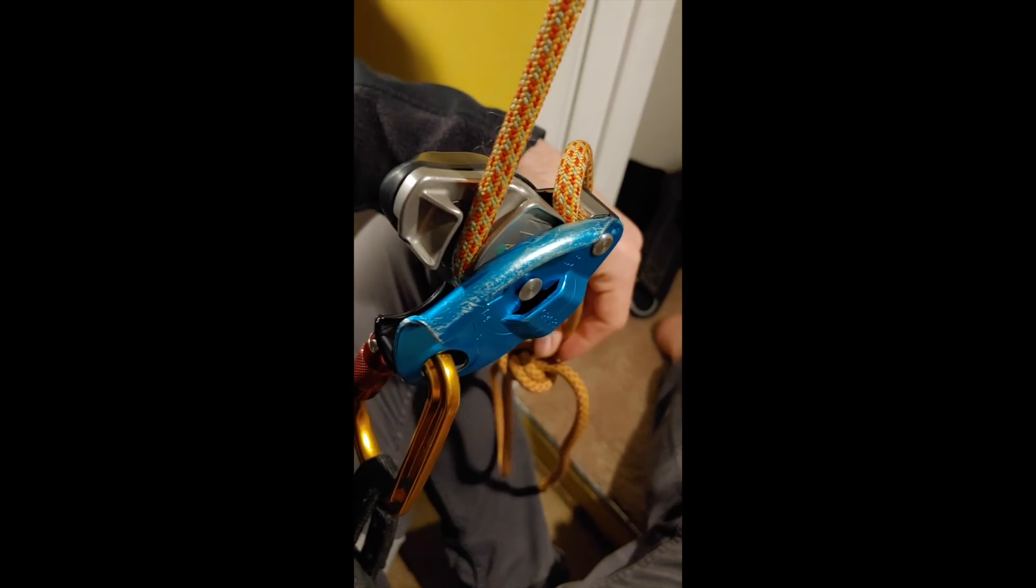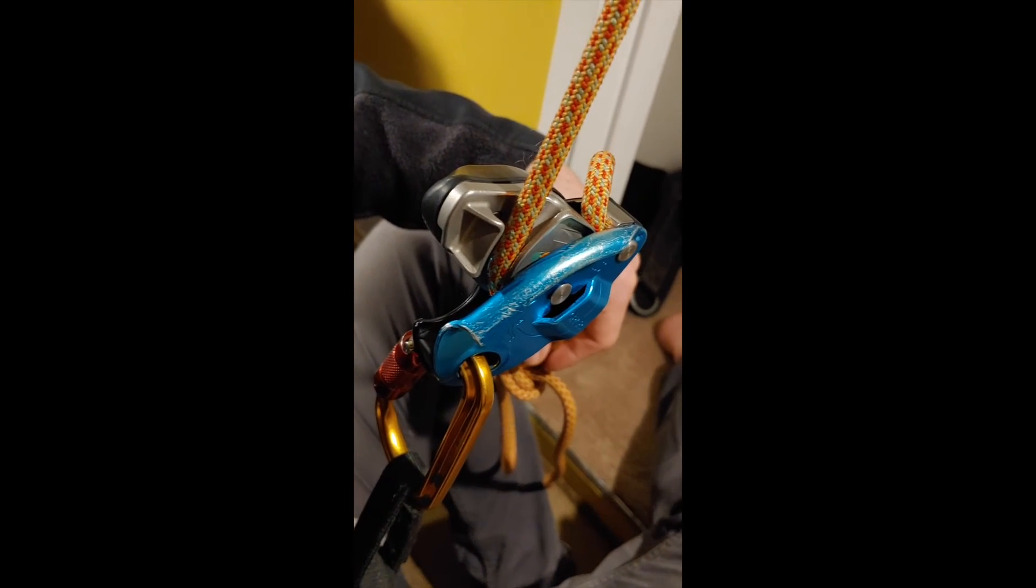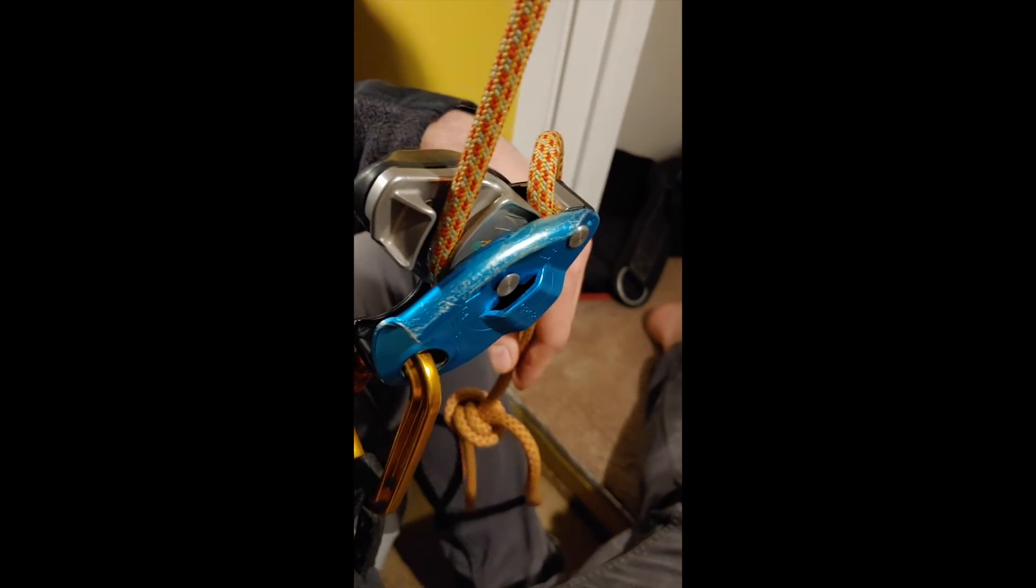But if there's somebody hanging on this rope or they're ascending this rope, their full body weight's on it, as soon as the Grigri starts to slide, you're going to go until you hit the person below you.